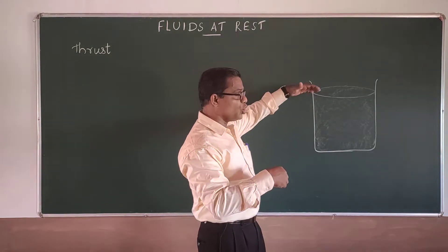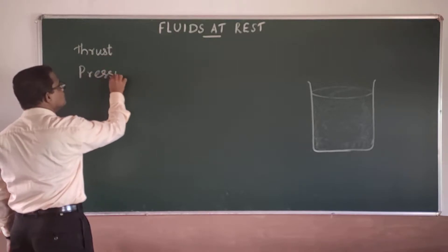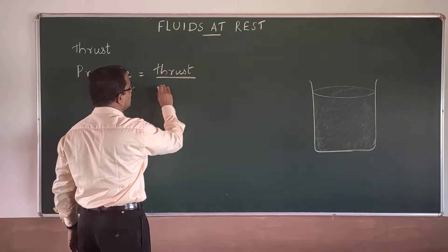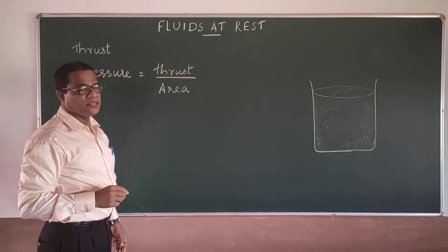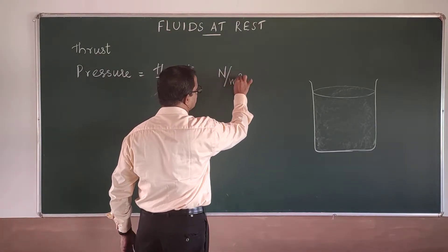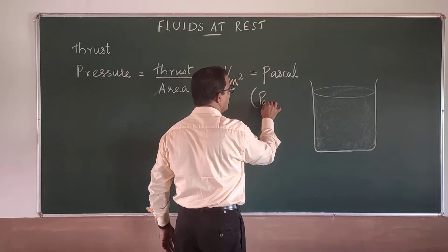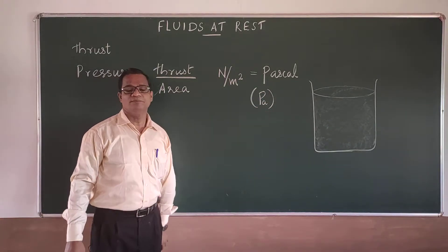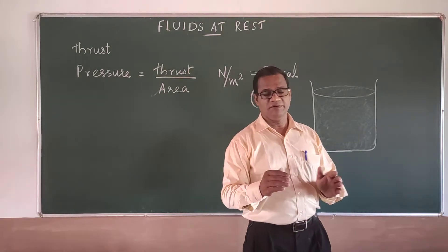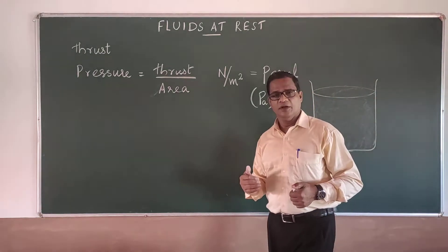This thrust is acting normally onto an area; therefore, it derives a pressure due to the liquid column. That pressure will be equal to thrust by area. The unit is taken as Newton per meter square, and this is called Pascal, denoted by Pa — the unit of pressure. As the liquid is applying thrust normally onto the surface everywhere it is resting, the force due to the liquid column is taken in terms of pressure of the liquid.